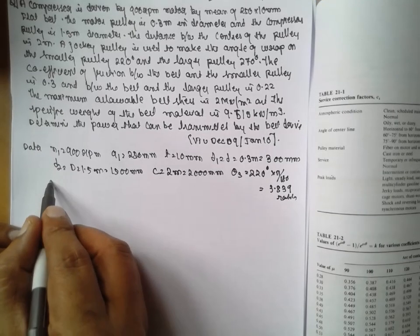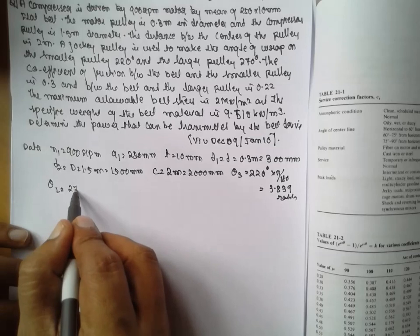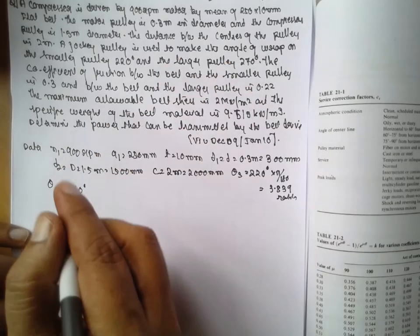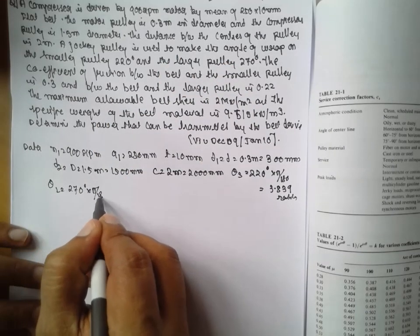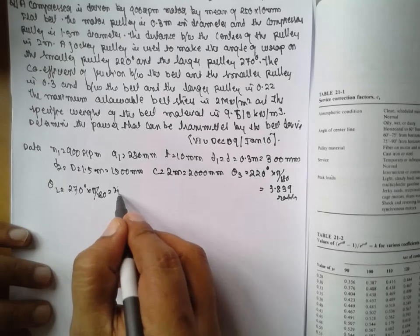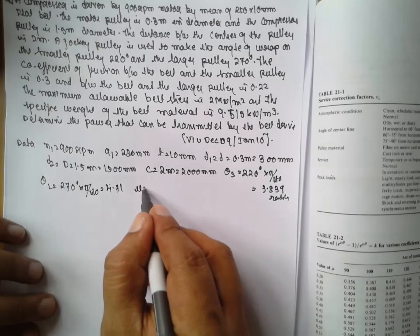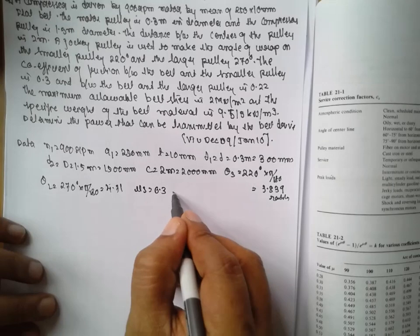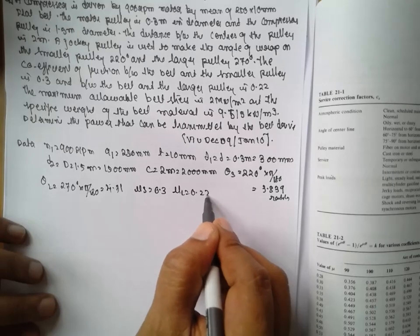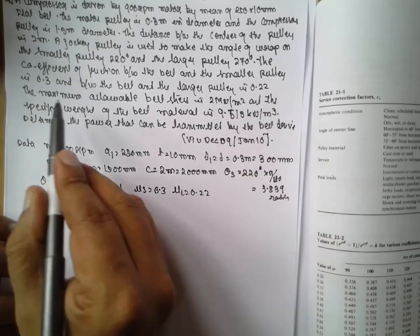Next, theta L is given as 270 degrees because they have said in the larger pulley. Multiply by pi by 180, the answer will be 4.71 radians. Mu is given: mu S is given 0.3 and mu L is given 0.22 from the data. Larger mu, smaller mu.